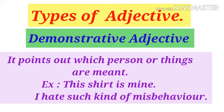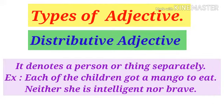The sixth one is distributive adjective, which denotes a person or thing separately. For example, 'Each of the children got a mango to eat' — 'each' refers to each child separately, one by one, so it is a distributive adjective. Another example: 'Neither she is intelligent nor brave' — 'neither' is also a distributive adjective.